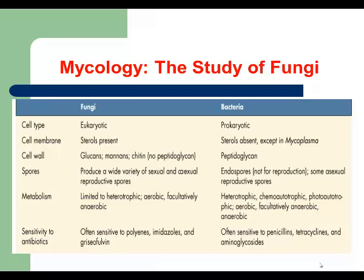Let's look at this chart which compares the main characteristics of fungi and bacteria. Starting with cell type: fungi are eukaryotes, bacteria are prokaryotes. Next, cell wall: bacterial cell walls are made of peptidoglycan, a very specific structure found only in bacterial cell walls. Fungi have no peptidoglycan in their cell wall, but they have a very specific structure of their own.